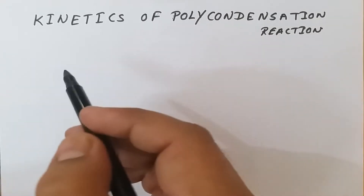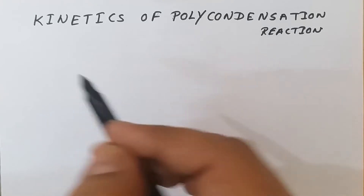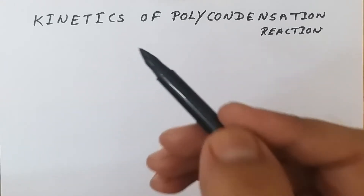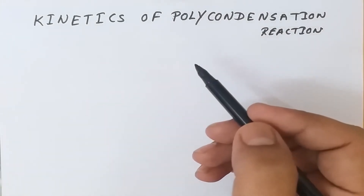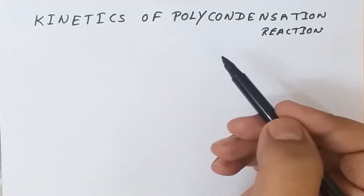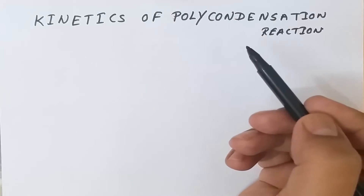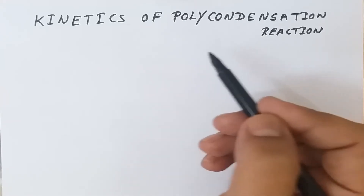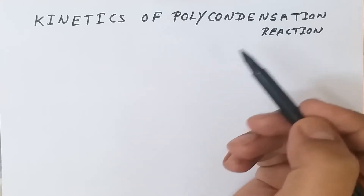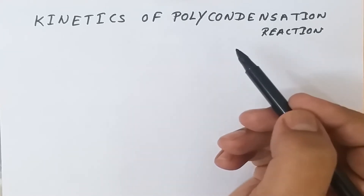Unlike ionic or chain polymerization, in polycondensation the elementary composition of the repeating unit changes — new functional groups are formed. The simplest example is nylon 66, a polycondensation reaction where hexamethylene diamine and adipic acid react to form an amide (–CONH–) linkage, with water as the by-product.